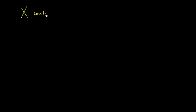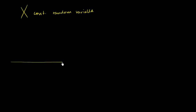Let's say I have some random variable x, and it is a continuous random variable. I want to explore and construct a probability distribution for it. On the horizontal axis are the values that x can take on, and on the vertical axis I'll say the probability density for each of those values. We'll discover in a few moments why we're calling it density.